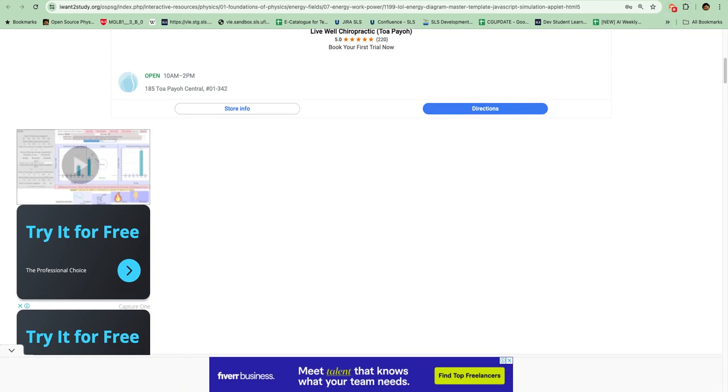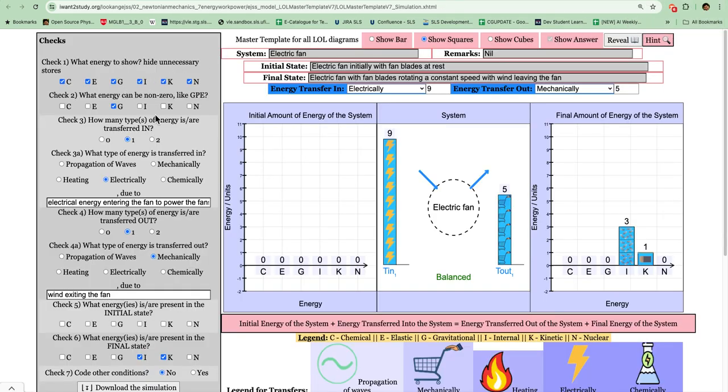After clicking this, it should bring you to this page where you can see on the left panel the control and on the right the preview of the interactive. So in this case, let's say that the system is a fan, an electric fan.